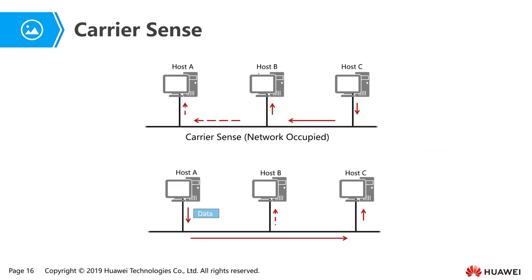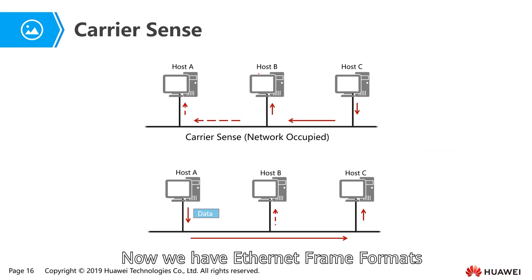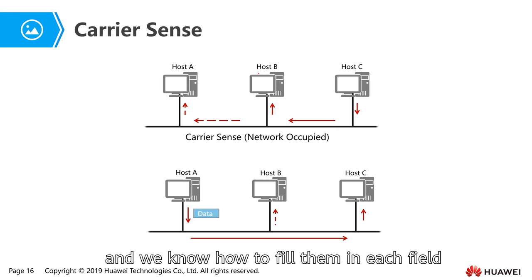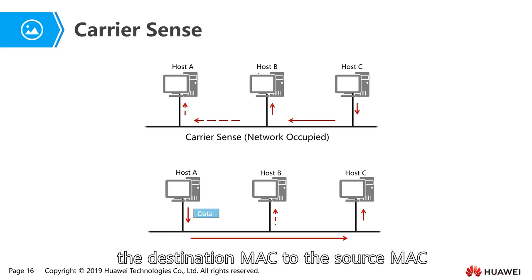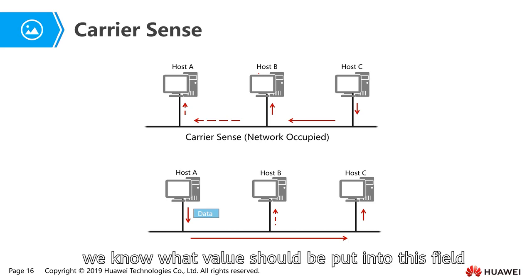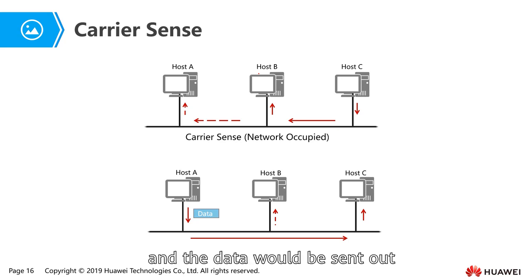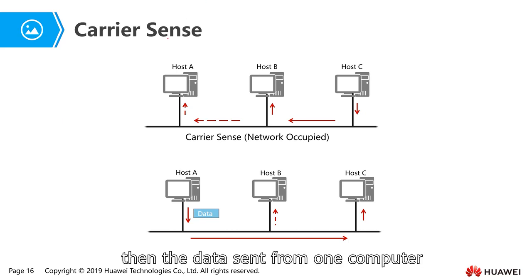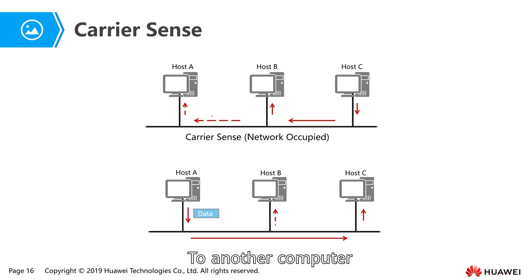Now we have the Ethernet frame format, and we know how to fill in each field: the destination MAC, the source MAC, and the type field. We know what values should be put into each field, and then the data to be sent from one computer to another computer.